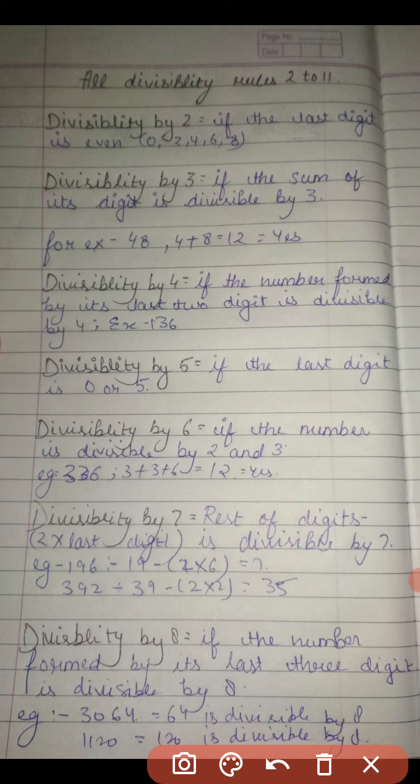Now we will learn divisibility by 8. If the number formed by its last 3 digits is divisible by 8. If we take the example of 3064, because 0 has no value, we will take 64. We know 64 is divisible by 8.